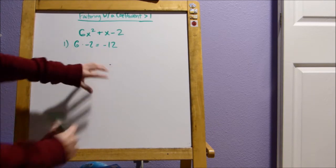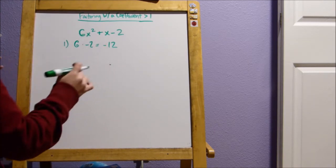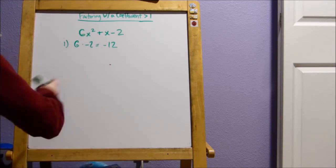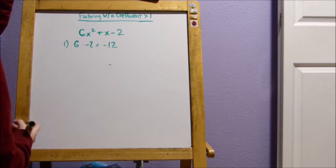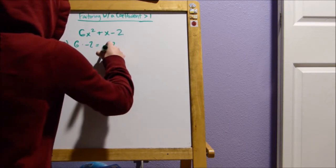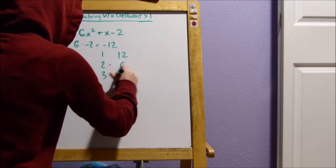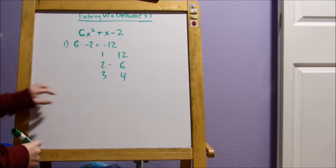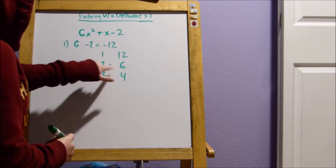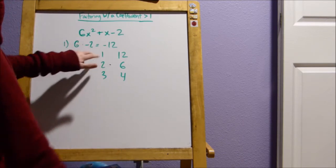Now we see we have to list all of 12's factors, so the stuff that when you multiply together it equals 12. So 1 and 12, 2 and 6, 3 and 4, and then 6 and 2, 12 and 1. So notice this negative.